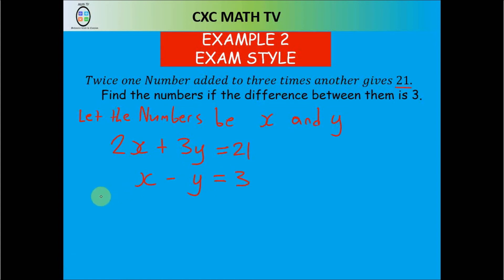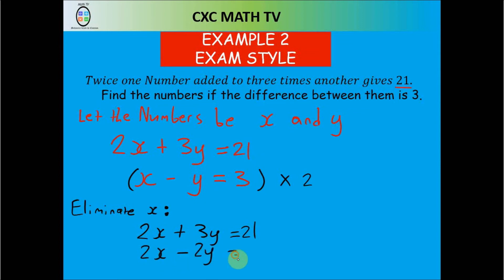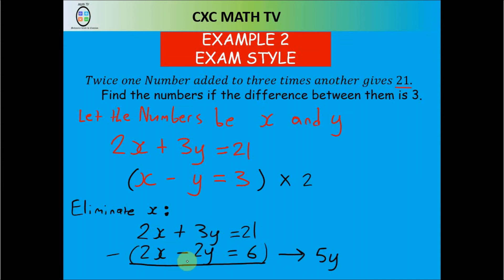Let's use the elimination method. We want to eliminate x, so we need the same number of x's in both equations. From equation 1: 2x plus 3y equals 21. Multiply equation 2 by 2: 2x minus 2y equals 6. Now subtract the two equations — 2x cancels — and 3y minus negative 2y becomes 5y.